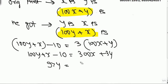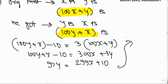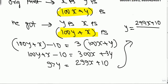So we get 97y = 299x + 10. Therefore, y = (299x + 10) / 97.